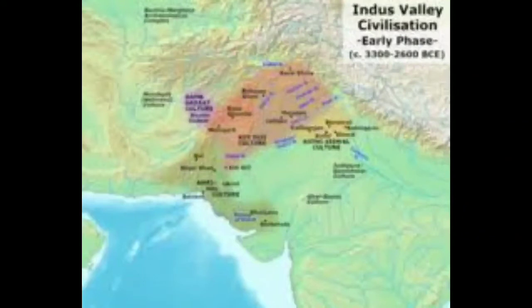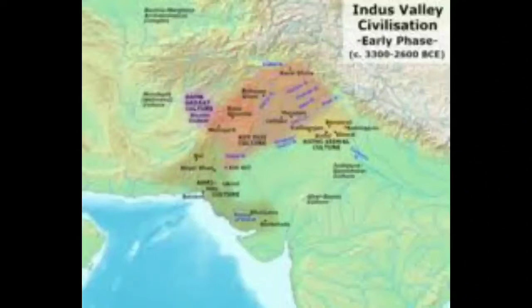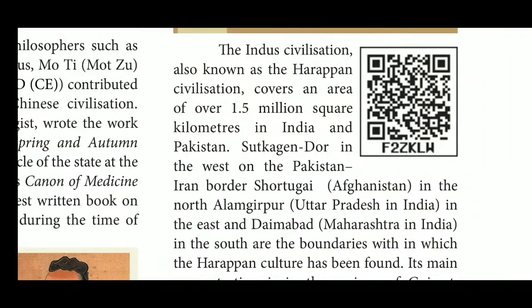In the present, the Indus Valley civilization is situated in both countries, Pakistan and India. Its western boundary is Sutkagen-dor near the Pakistan-Iran border, and in the south is Sutkagendar. In Afghanistan is the northern boundary, Alamgirpur in Uttar Pradesh in the east, and Daimabad in Maharashtra in the south. This civilization flourished across the present countries of Pakistan, Afghanistan, and India.